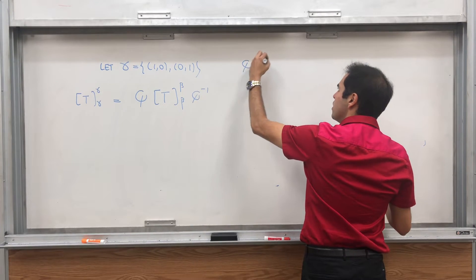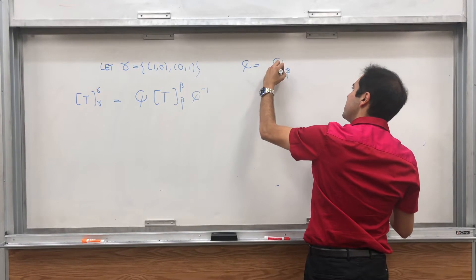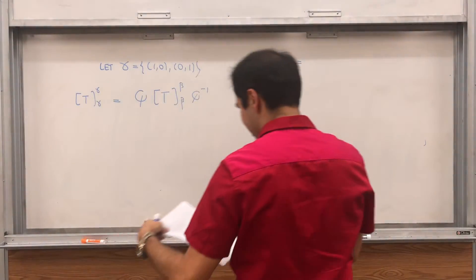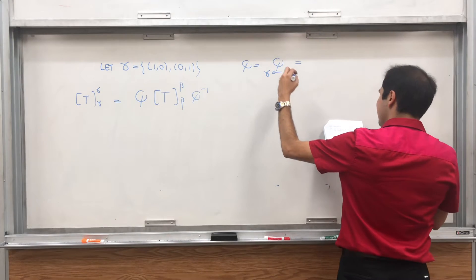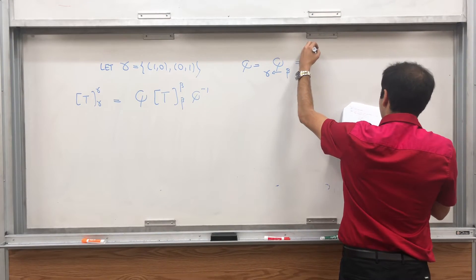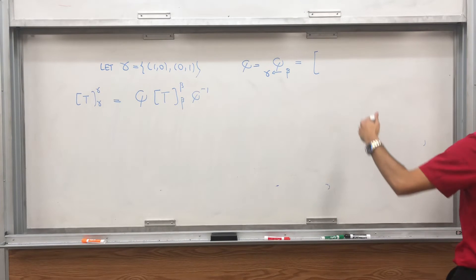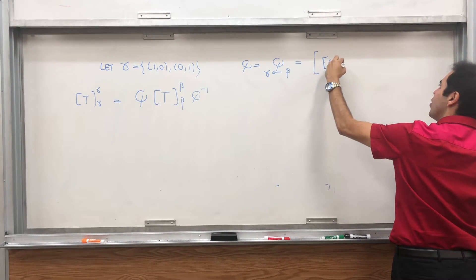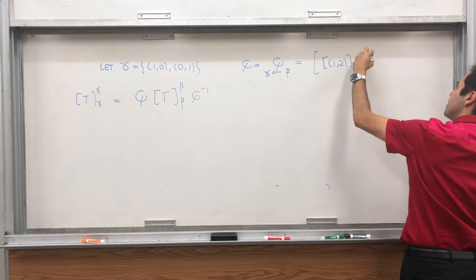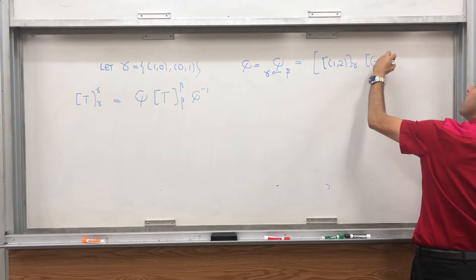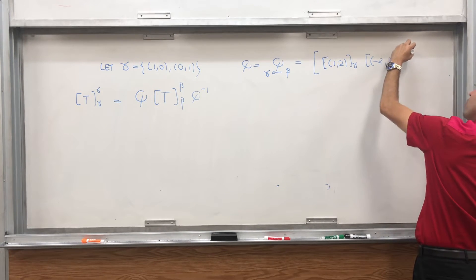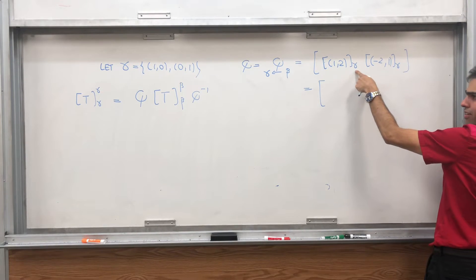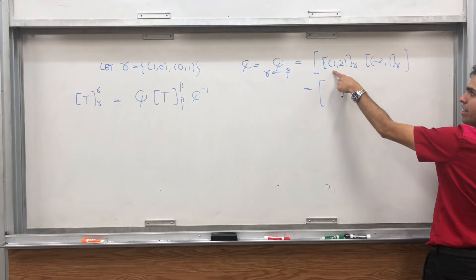where here Q is the change of coordinates matrix from beta to gamma. And I calculated it, I don't quite remember what it was, but you can calculate it, because the way to form it is just you take your old vectors 1, 2, and evaluate them with the new system, and minus 2, 1, with the new system, and because this is the standard basis,